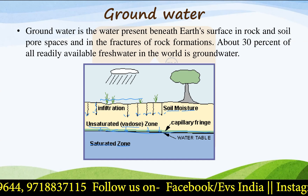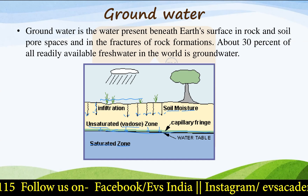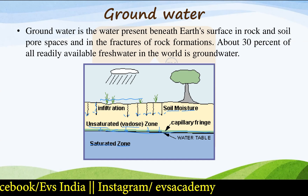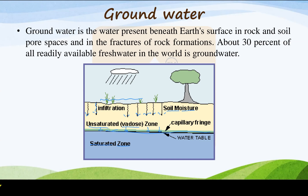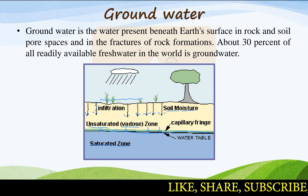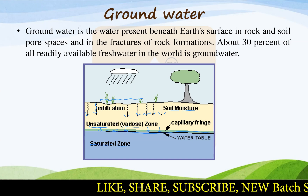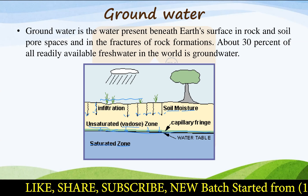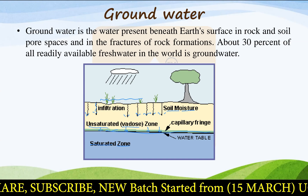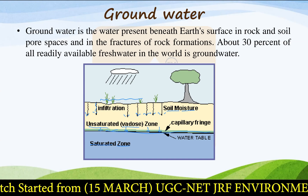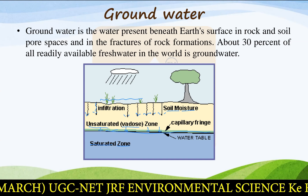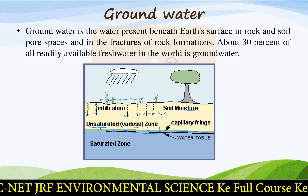About 30% of all readily available fresh water in the world is groundwater. We already have very little fresh water on the Earth's surface — less than 3%. The majority of that is in ice caps, about 2%, and out of the remaining 1%, almost 30% is readily available as groundwater. So groundwater is the most important source of fresh water on Earth, especially for human beings.